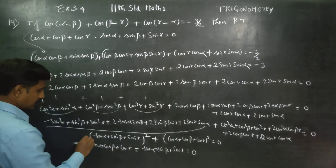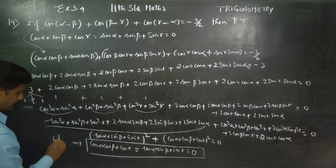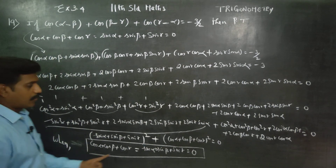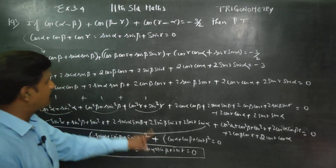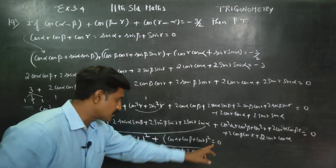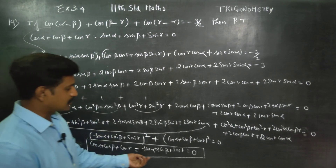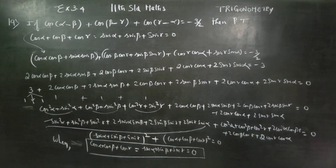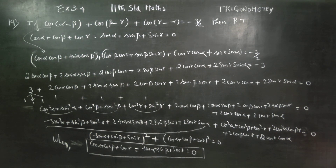This implies cos alpha plus cos beta plus cos gamma equals 0, and sin alpha plus sin beta plus sin gamma equals 0. This is true and can be fulfilled. So the proof is complete and this is true.